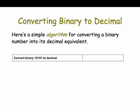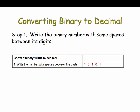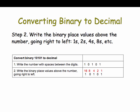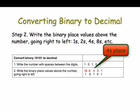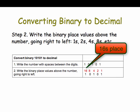So let's convert binary 1 0 1 0 1 into decimal. Step 1: write the binary number with some spaces between its digits. So I've written 1 0 1 0 1 in the right column. Step 2: write the binary place values above the number going right to left. So we start with the ones place, then there's the twos place, then the fours place, the eights place, and the sixteens place. Each place going right to left is twice the value of the place to its right.